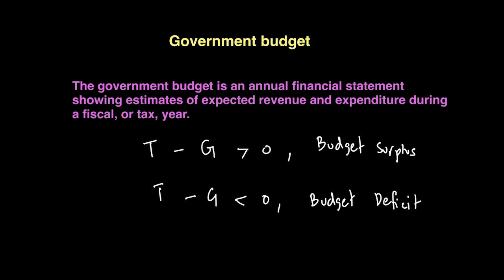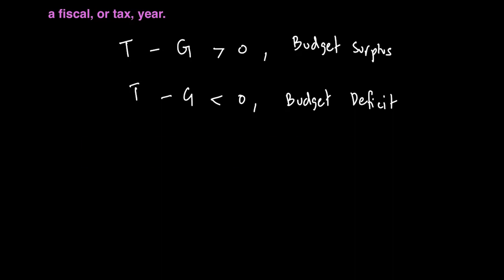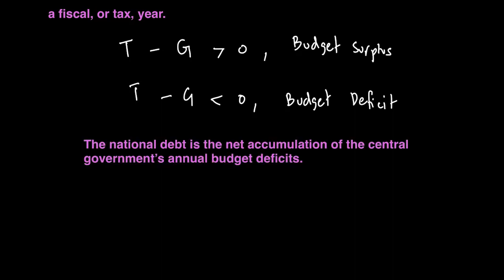When we have a budget deficit, we need to pay for that deficit. In other words, the country may need to accumulate what we call national debt. National debt is the net accumulation of the central government's annual budget deficits — the total amount of money the central government owes to its creditors. We also call this public dis-saving.